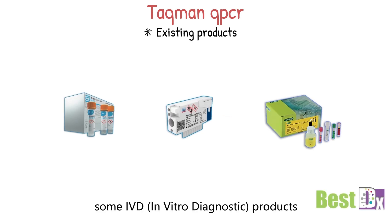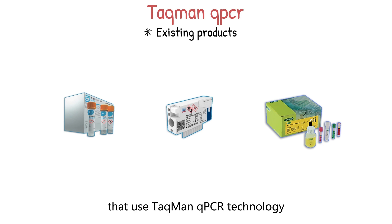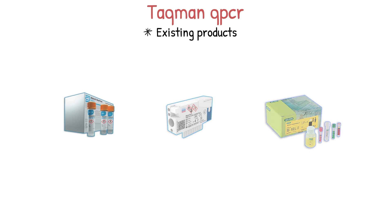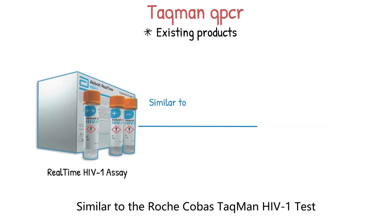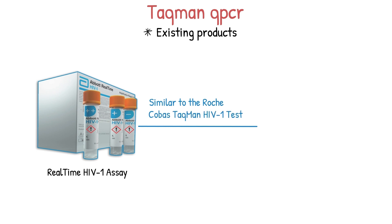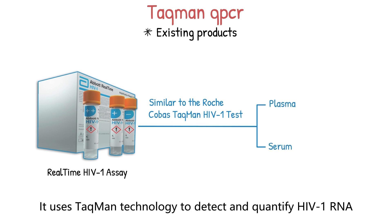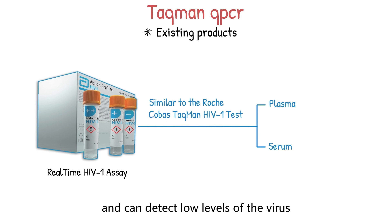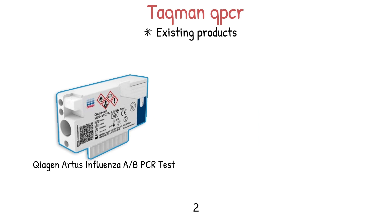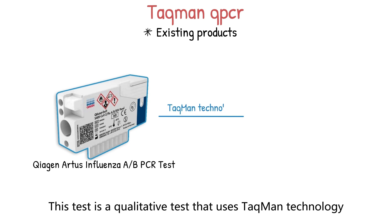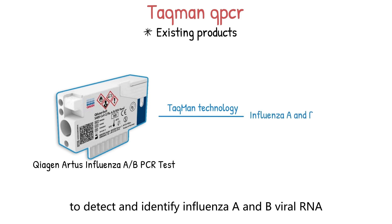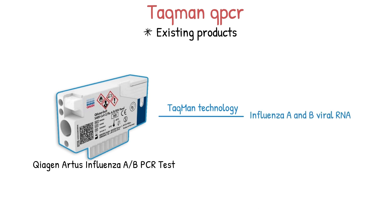Some in vitro diagnostic, or IVD, products that use TaqMan qPCR technology. First is the Abbott RealTime HIV-1 assay. Similar to the Roche Cobas TaqMan HIV-1 test, this test is also used to measure the amount of HIV-1 viral load in human plasma or serum. It uses TaqMan technology to detect and quantify HIV-1 RNA, and is highly sensitive, capable of detecting low levels of the virus. Two is the Qiagen Artus Influenza A/B PCR test, a qualitative test that uses TaqMan technology to detect and identify influenza A and B viral RNA in respiratory specimens. The test is highly sensitive and can detect the presence of the virus even in small amounts.